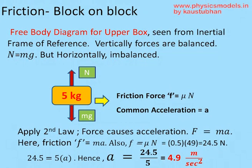Now we draw a free body diagram for the upper box. The vertical forces N and Mg are balanced. In the horizontal direction we see an imbalanced force — a yellow arrow representing friction — which causes the mass to accelerate towards the right with common acceleration A. Observing from an inertial frame of reference, we apply Newton's second law: F = MA. This force is the friction force, so F = μN = MA, and solving for A gives 24.5 ÷ 5 = 4.9 meters per second squared.